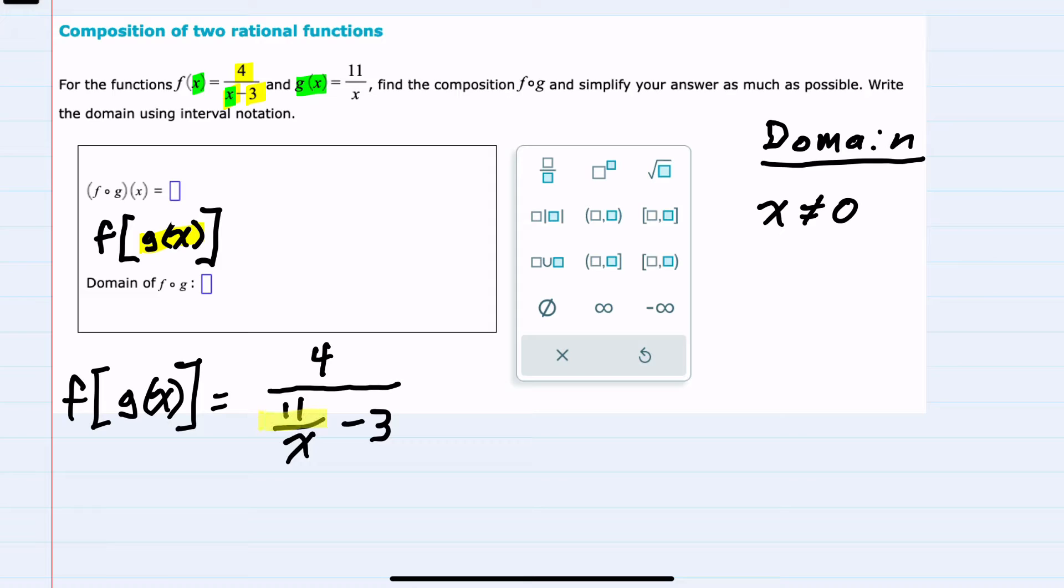And here we have another denominator that cannot be equal to zero. So 11 over x minus 3 cannot be zero, because that would also have us dividing by zero.